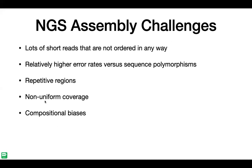Non-uniform coverage makes it difficult to get a complete assembly. Compositional biases — whether your genome is AT-rich or GC-rich — can affect both the sequencing process and the assembly. These are all challenges to be aware of as you plan your sequence assembly.